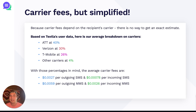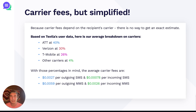So based on Texla's user data, here's how our average breakdown on carriers looks. AT&T is going to resemble about 40% of your contacts list. Verizon is going to be right about 30%. T-Mobile is going to be at 26%. And other carriers are going to cover about 4%. With those percentages in mind, the average cost for carrier fees is going to be about $0.0027 per outgoing SMS and $0.00078 per incoming SMS. For MMS, it's going to average about $0.0059 per outgoing MMS and $0.0026 per incoming MMS.